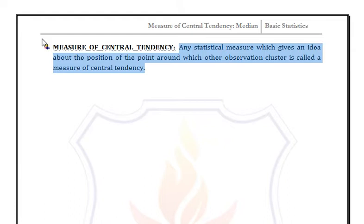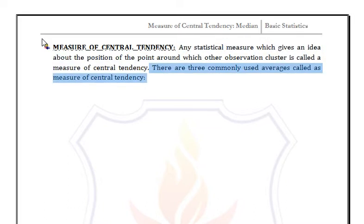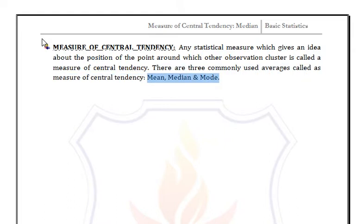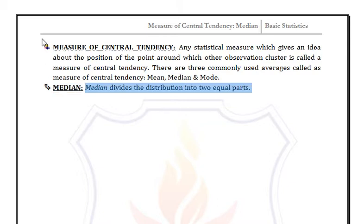For any data, the most representative value is known as central tendency. There are three commonly used averages called measures of central tendency: mean, median, and mode. Here we discuss median. Median divides the distribution into two equal parts.